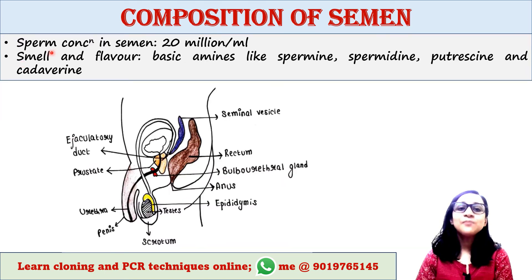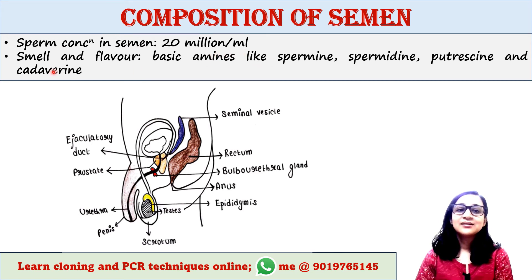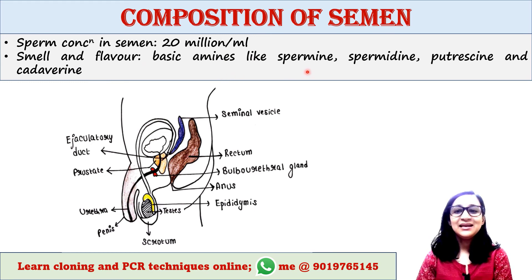The normal sperm concentration in semen is 20 million per milliliter. The smell and flavor of semen are due to basic amines like spermine, spermidine, putrescine, and cadaverine.